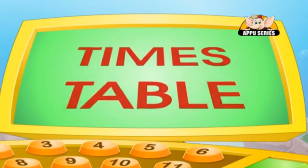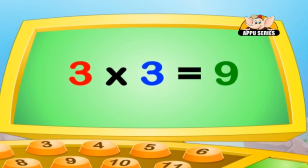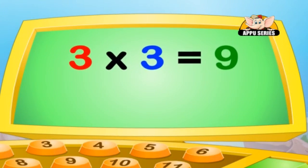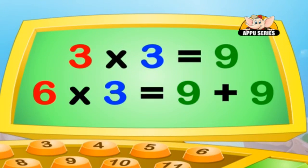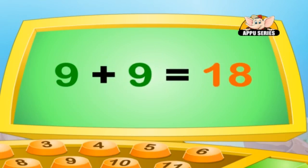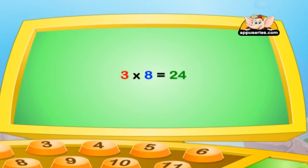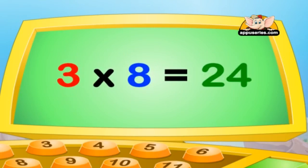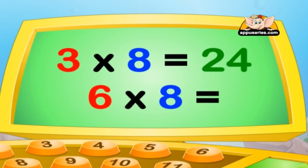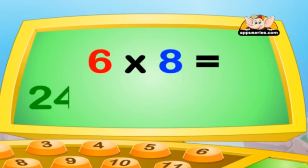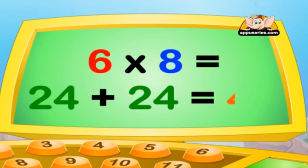If 3 into 3 equals 9, then 6 into 3 equals 9 plus 9, which equals 18. Let's do another one. If 3 into 8 equals 24, then 6 into 8 is equal to 24 plus 24, which is 48.